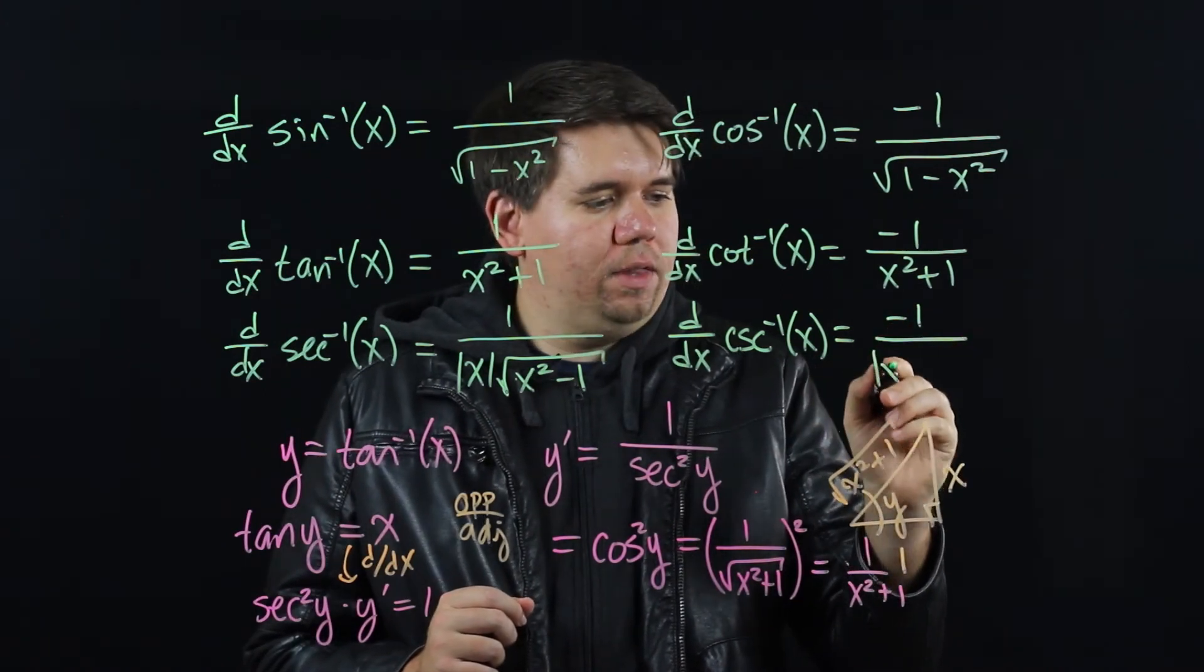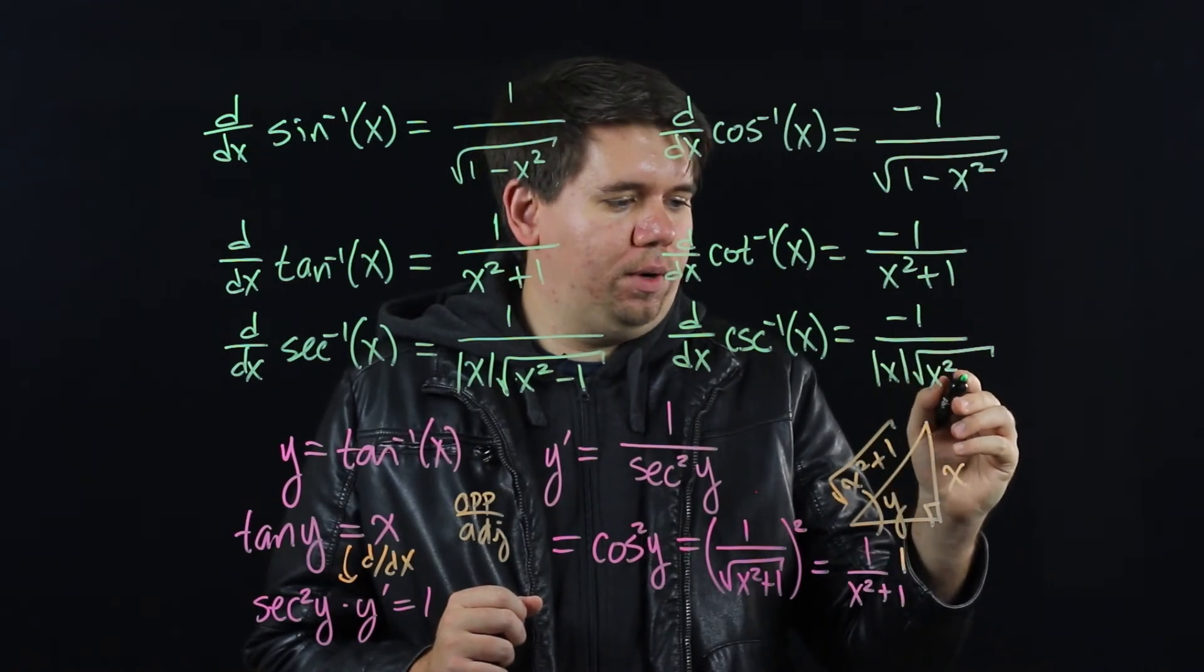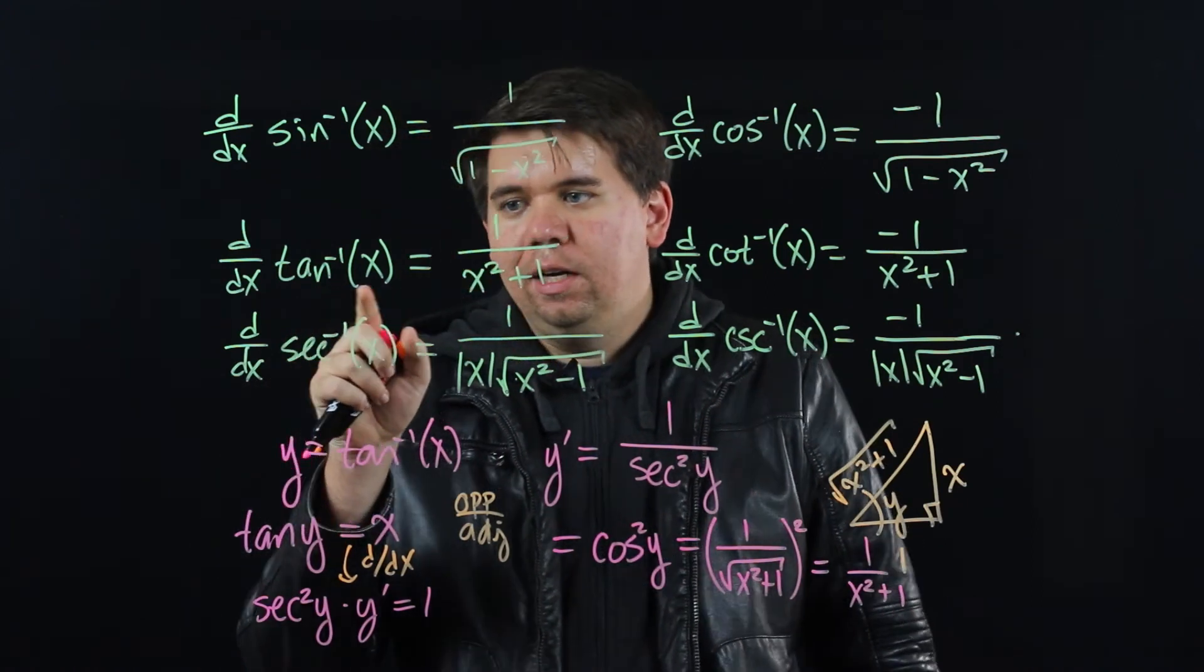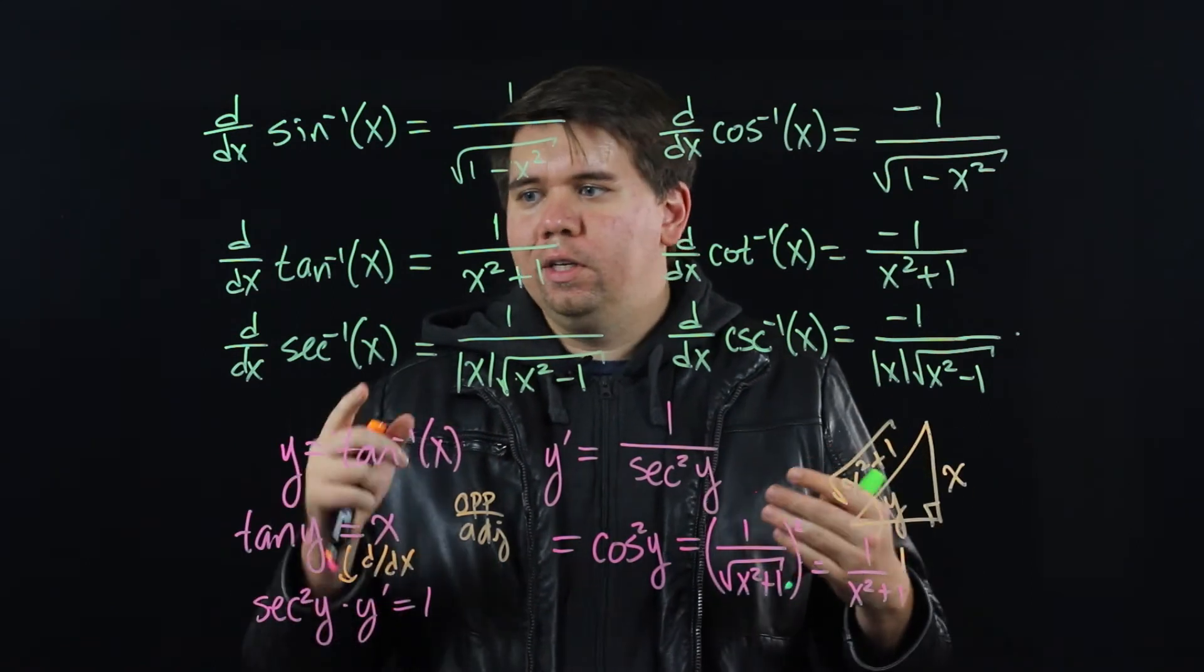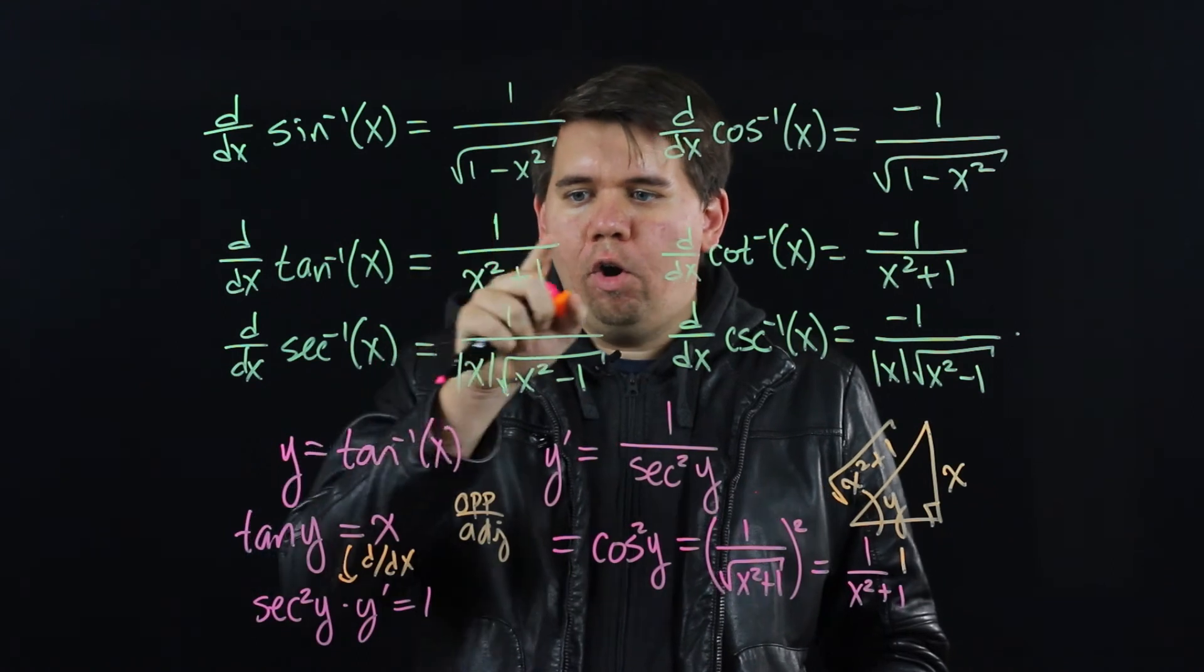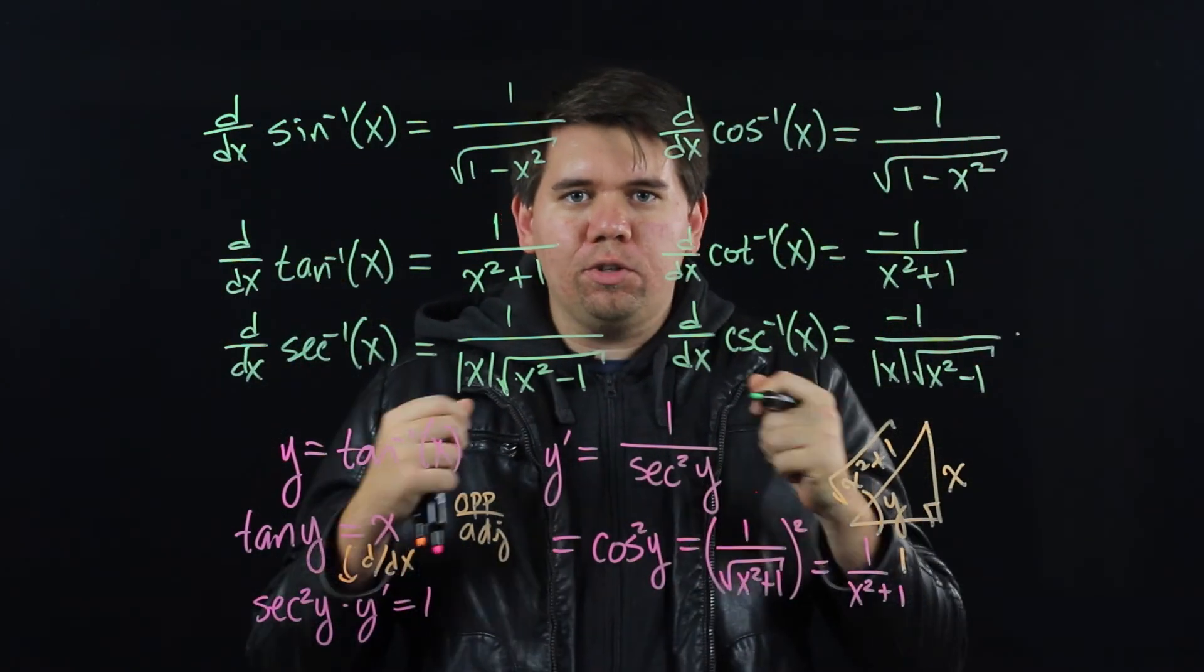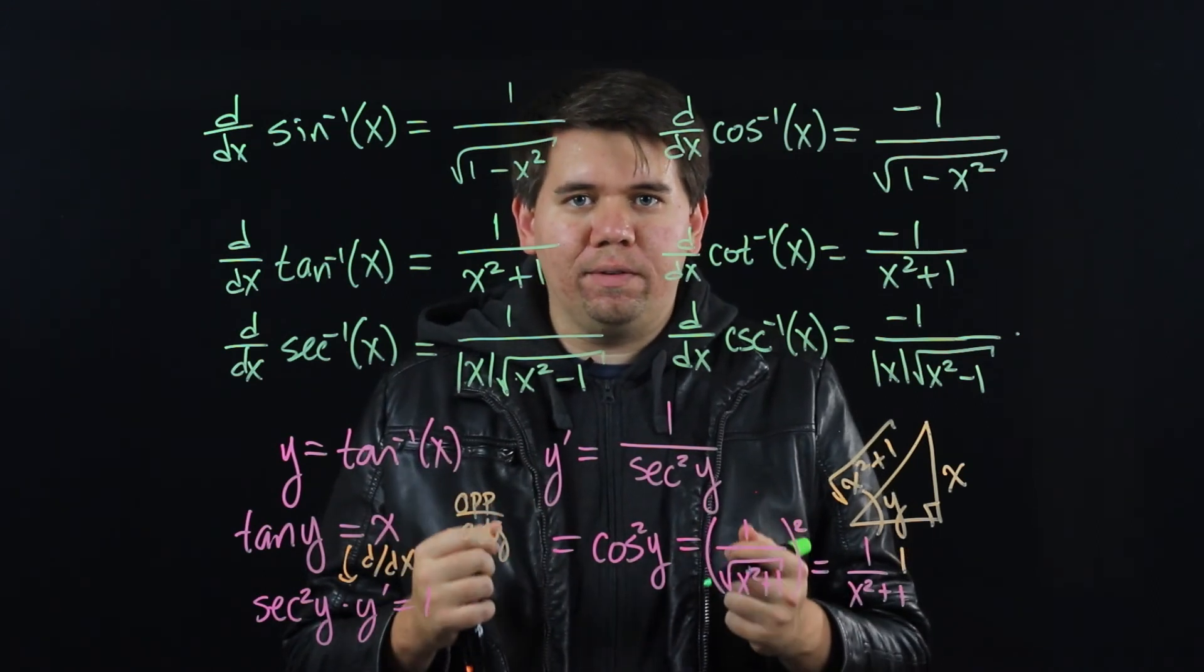Of course, you can use these rules alongside your other ones. If you have like tangent inverse of e to the x, you would have to use your chain rule. So your derivative of tangent inverse of e to the x would just be 1 over e to the x squared plus 1 times the derivative of e to the x and so forth. So here we just have a new set of rules to add to your growing library of functions that you're able to calculate the derivative of.